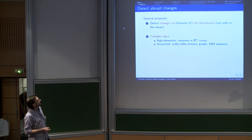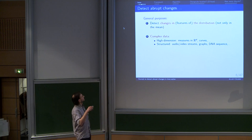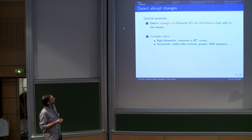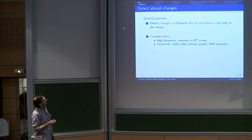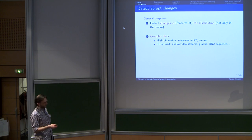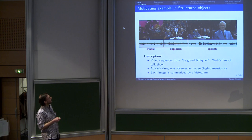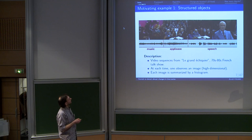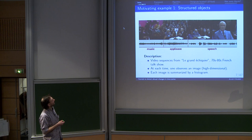The second point is that we would like to deal with complex data. I split them into two different kinds: high-dimensional ones — high-dimensional measures or curves — and more structured objects such as video sequences, graphs, or DNA sequences. For instance, we would like to be able to detect video sequences in which a given action is happening.